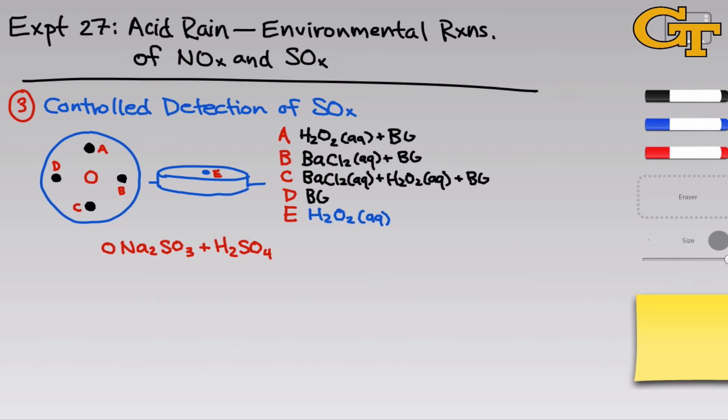And the purpose of the barium chloride is to detect this sulfate. Barium sulfate is insoluble in water, so if barium and sulfate ions find themselves in the same aqueous solution, barium sulfate will precipitate out.